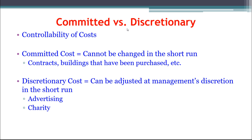Committed versus discretionary costs are typically discussed in relation to fixed costs and describe how well we can control a cost in the short run. Committed costs cannot easily be changed — they're things we've locked into, like a signed contract or a building purchased to last 15–20 years, where changes would incur penalties. Discretionary costs, by contrast, can be adjusted at management's discretion fairly easily — examples include advertising or charitable giving.